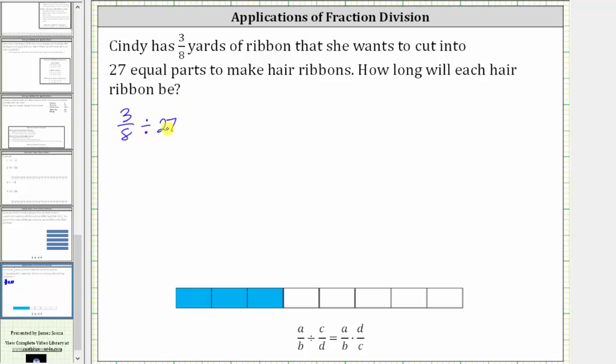Because we're dividing a fraction by 27, it's helpful to write 27 as a fraction with a denominator of one, which gives us 3/8 divided by 27/1.